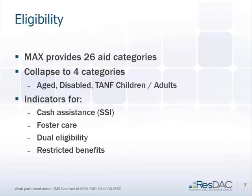There are some things you might want to pick out. SSI cash assistance is fairly common among the aged and disabled categories but not everyone has it, so you can create an indicator variable for cash assistance. Foster care children often warrant their own group — when looking at behavioral health service use among children, we'll look at disabled children, foster care children, and then the rest of the TANF children separately. Foster care children tend to have illness severity between TANF children and disabled children, and are often exposed to more severe adverse childhood events leading to mental health needs.